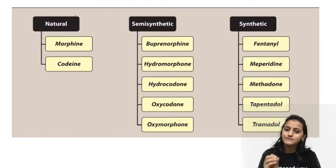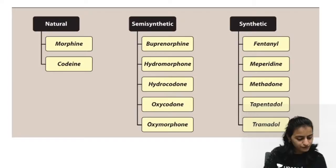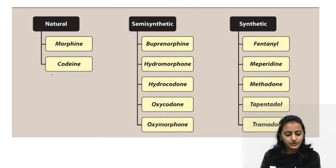Opioids are classified as natural, semi-synthetic, and synthetic. You can get exam questions on this — for example, a clinical scenario where a patient was given a semi-synthetic opioid for analgesia, asking which drug was given. If you remember natural and synthetic, you automatically remember semi-synthetic.